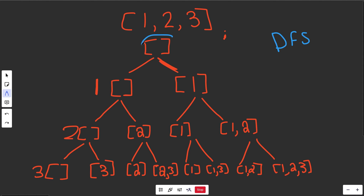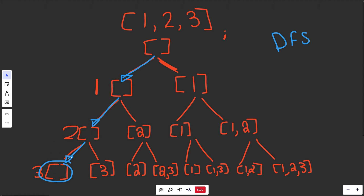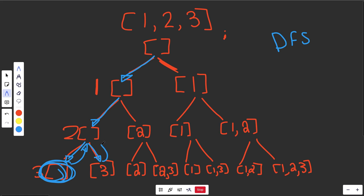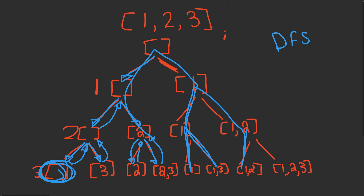The path the computer takes starts at the empty list and goes left first — left meaning don't pick the number. Considering value 1, we don't pick it, ending at empty. We go left again, don't pick 2, then left again, don't pick 3. That's when the index goes out of bounds, so we need to backtrack — called recursive backtracking because our function is recursive. When we hit a solution, we go back up to explore the other branches. This is just a traditional depth-first search traversal visiting all nodes in order.